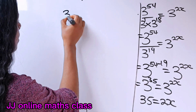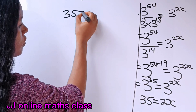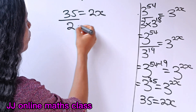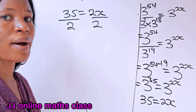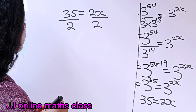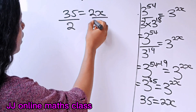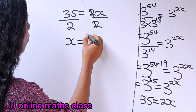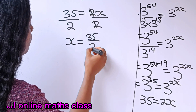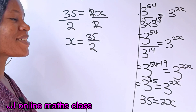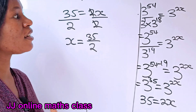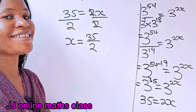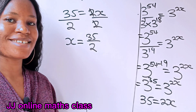We have 35 equals 2x. Dividing both sides by 2, we get x equals 35 over 2. Thank you so much for watching — please watch another one and have a nice day.